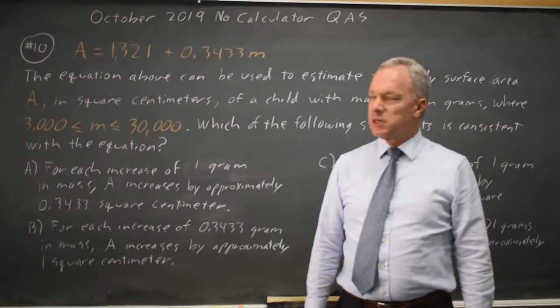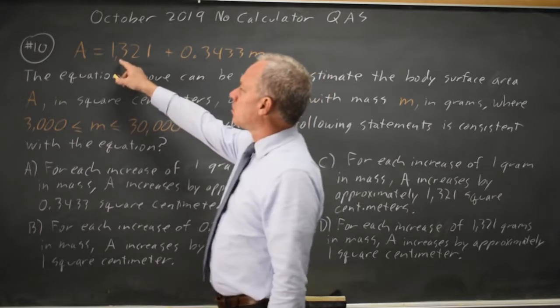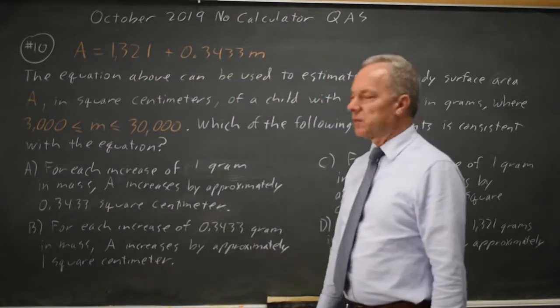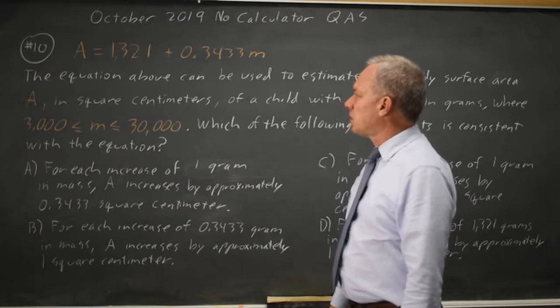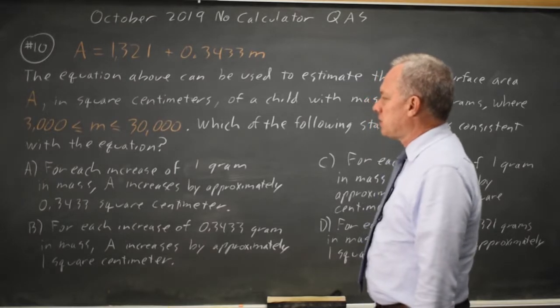This is No Calculator question number 10. The College Board is asking us to interpret this equation A equals 1321 plus 0.3433M in the context of the problem where A is the body's surface area and M is the mass in grams.